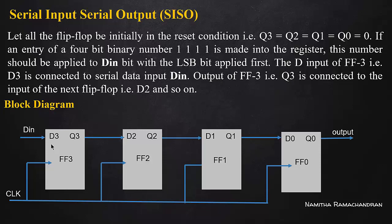This is serial input and serial output type shift register. Clock is common — clock is a common operation. This is an external input data. Single bit is input. If you have any data, you can enter it as external output. This is serial input and serial output — a register for serial data transformation.